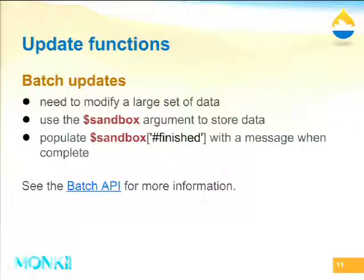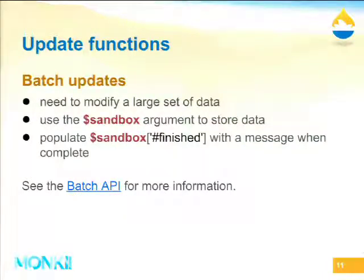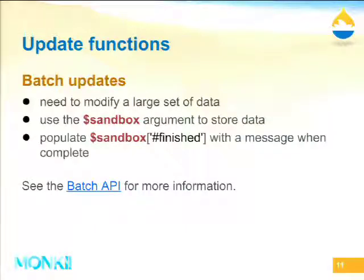Update functions can also be used for really large updates of many nodes. For example, if you had a node with a field that had no default value and later decided to add one, you might go back through all the nodes created before that decision and set the default value where it's null. If you've got thousands of nodes, you may not be able to update them all within one PHP execution time. For this reason, update functions can use the Batch API to pass information about what's been completed and run in several passes.